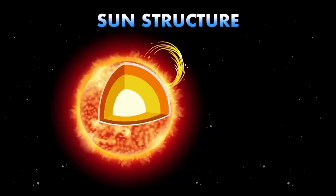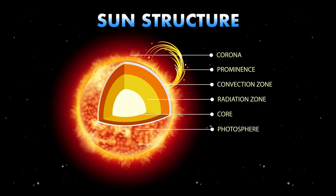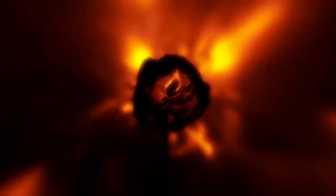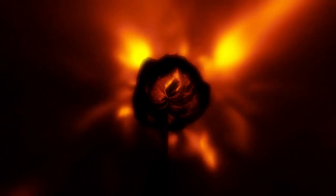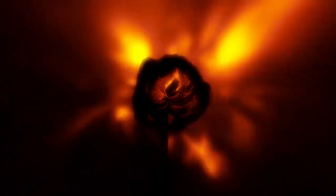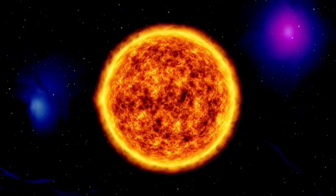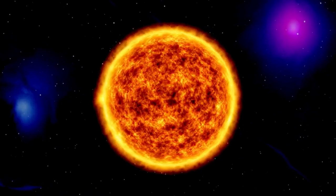As hydrogen fusion slows in its core, the outer layers expand, causing the star to grow even larger. Simultaneously, helium accumulates around the core, triggering a secondary fusion process known as helium envelope burning.